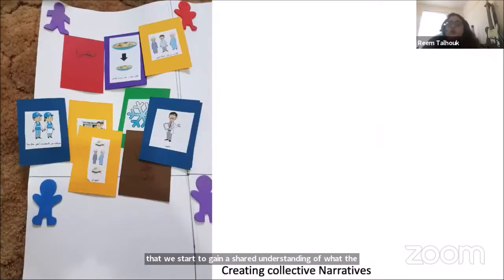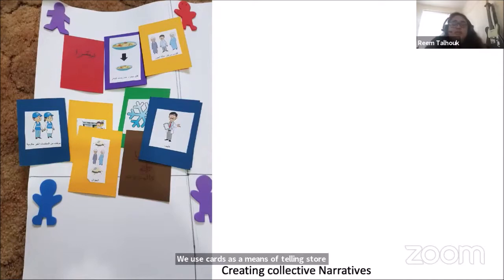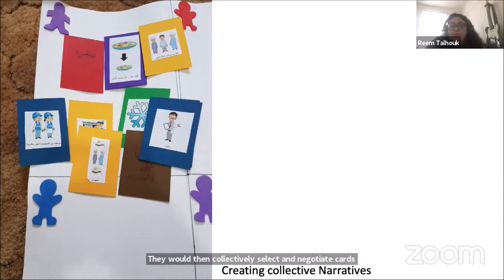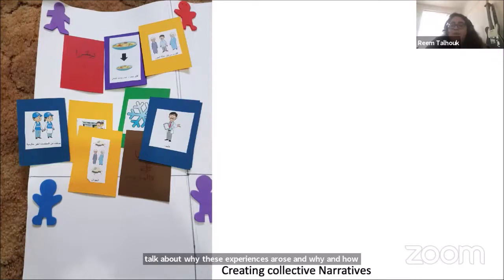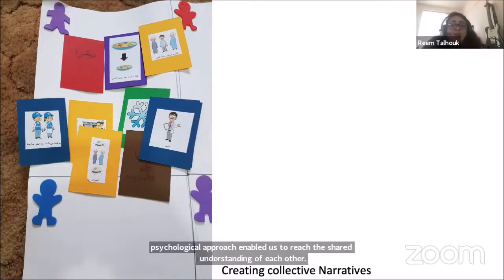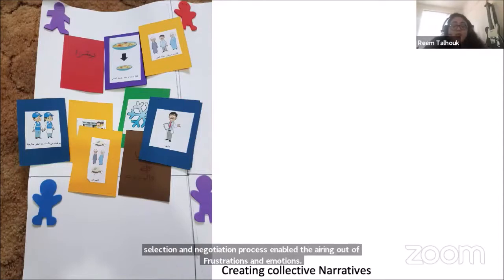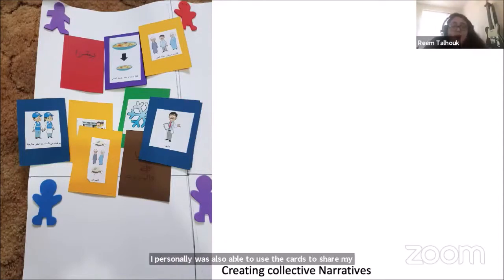We then moved to co-producing collective narratives. We used cards as a means of telling stories — the cards represented different factors revolving around food security issues. Women were also able to make their own cards. They would collectively select and negotiate cards to produce stories that reflect their experiences, talk about why these experiences arose, how they feel about it, and what angers them. This dialogical approach enabled us to reach a shared understanding of the factors impacting them individually and collectively. I personally was also able to use the cards to share my own story.